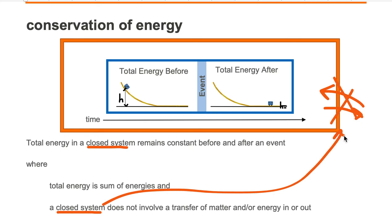Inside our rectangular box we have a situation. In this situation we have a sled that is at the top of a hill of height h. We want to know the total energy before the event occurs.